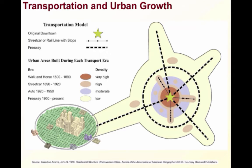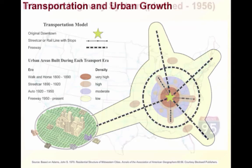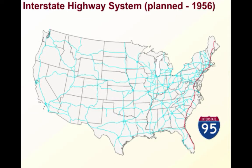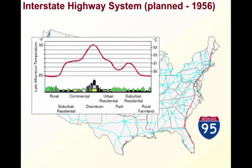Of course, with more urbanization also came changes in the environment, with increased air, water, noise, and light pollution in cities. Urban heat islands have also become an issue, where metropolitan areas retain more heat during the day due to the concrete, asphalt, and buildings in the urban landscape, unlike suburban and rural areas.